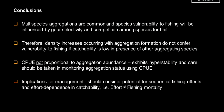To conclude chapter 3: multi-species spawning aggregations are common, particularly among groupers. Species vulnerability to fishing is influenced by gear selectivity and competition among species for bait. An increase in density with aggregation formation does not necessarily convert to vulnerability if catchability is low in the presence of other aggregating species. CPUE is clearly not proportional to aggregation abundance — it exhibits hyperstability, remaining stable regardless of aggregation size — and should not be used by scientists or fishermen to assess fishery status. These findings have clear implications for management, including the need to consider sequential fishing effects and the limitations of controlling fishing effort.